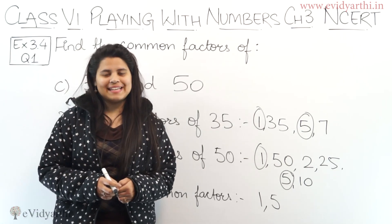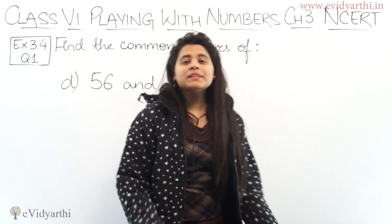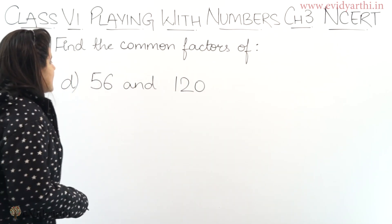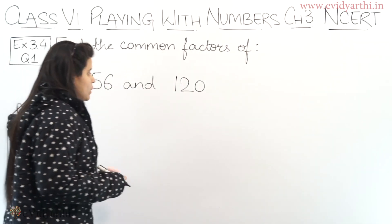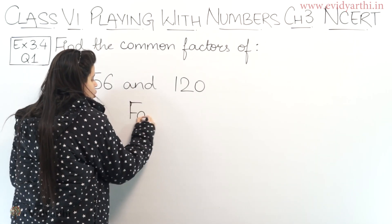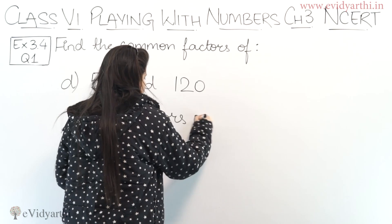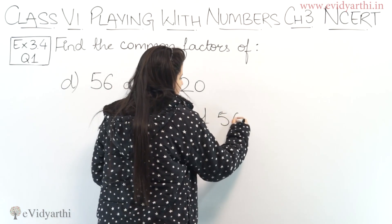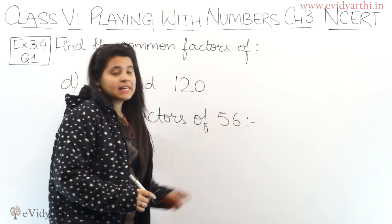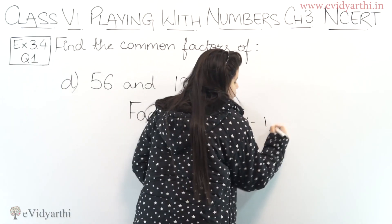Now let's come to Part D. The numbers are 56 and 120. First of all, we will write the factors of 56. We will write 1 and 56 as the first two factors, since 2 will be divisible.